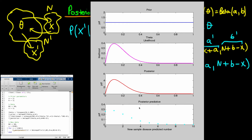The posterior predictive distribution has a different x-axis to the other three plots — I've picked a new sample size of 10. We see that the posterior predictive distribution exactly mirrors the posterior. In this example, the most likely number of individuals to have the disease in our new sample is also 1. Note that the posterior predictive distribution is discrete, since we're talking about the integer number of individuals in the new sample who have the disease.